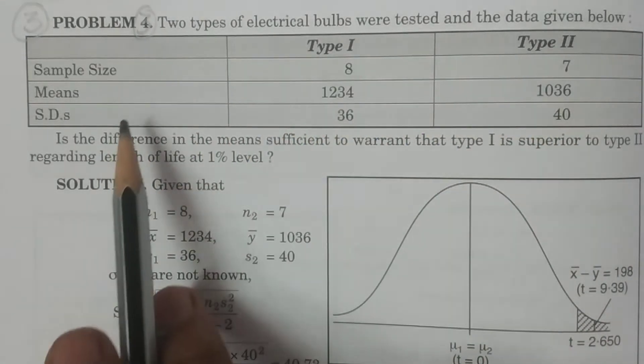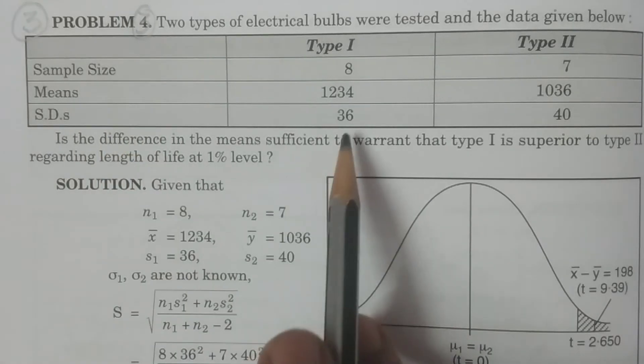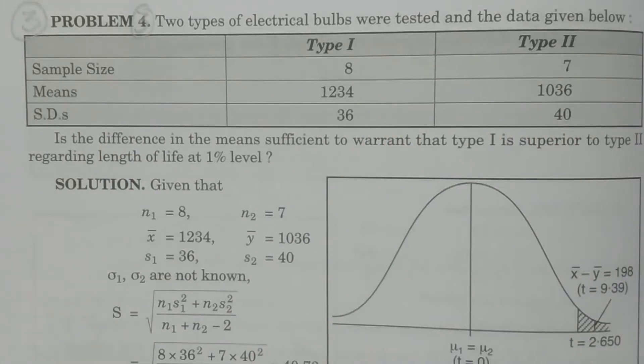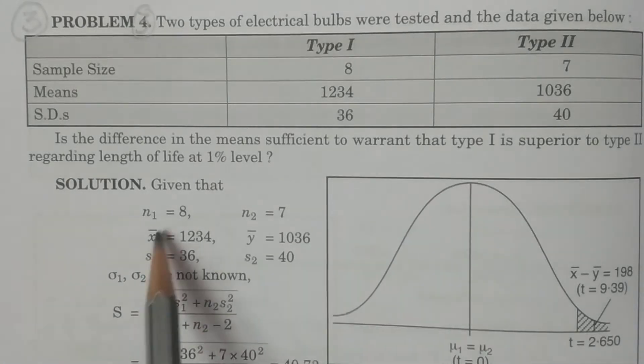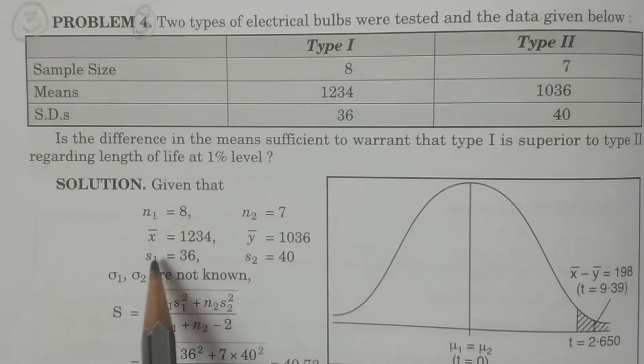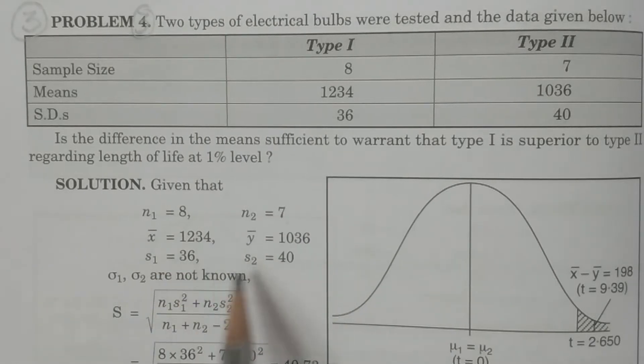Average lifetime, that is mean. Standard deviation 36 and 40 for Type 1 and Type 2. So this data is given: n1 is equal to 8, n2 is equal to 7, x̄ and ȳ, s1 and s2.